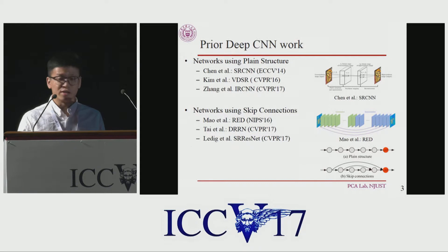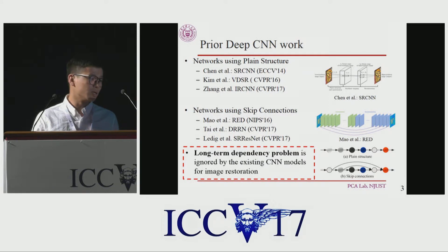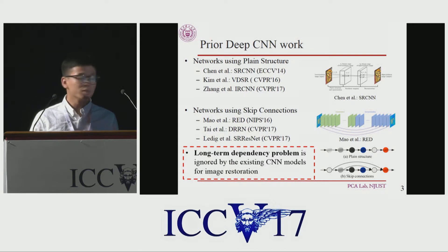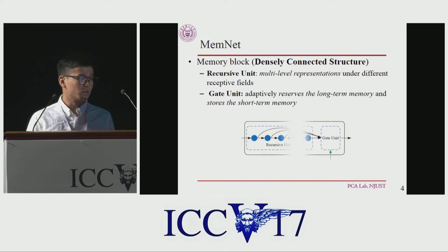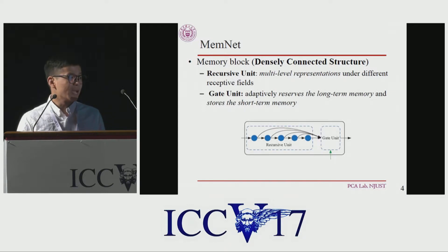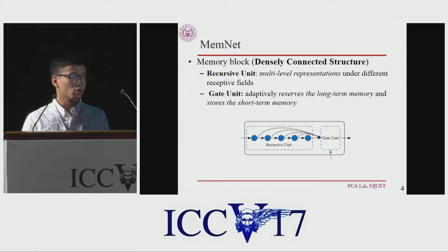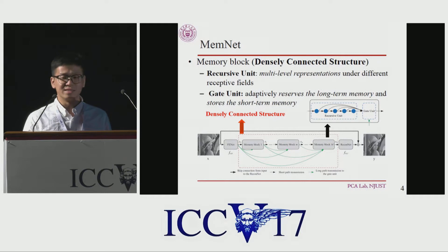That means, especially when the depth grows, the long-term dependency problem is ignored by existing deep CNN models for image restoration. To address this problem, we propose a memory block, which contains a recursive unit that learns multi-level representations under different receptive fields, and a gate unit that is used to adaptively preserve the long-term memory and store the short-term memory. Our memory blocks are then stacked in a densely connected structure.